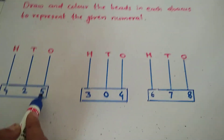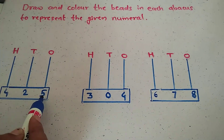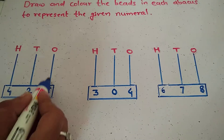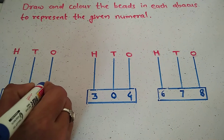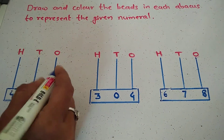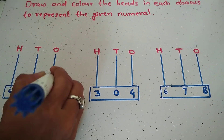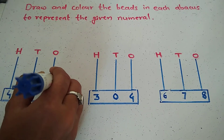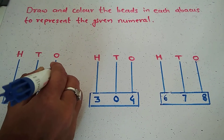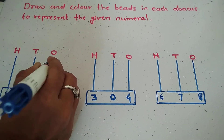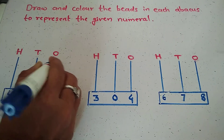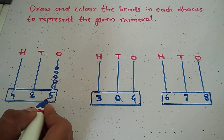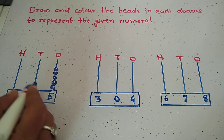Which number is in the ones place? Five. So in the ones place, draw five beads: one, two, three, four, and five. Total five beads.